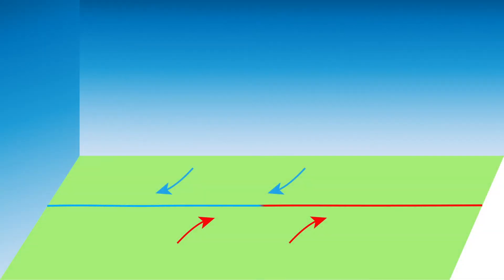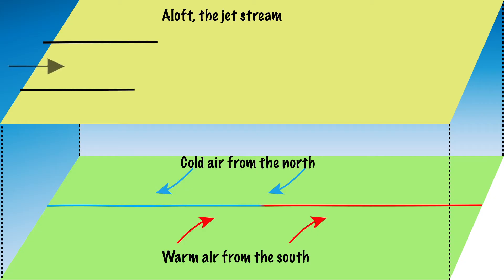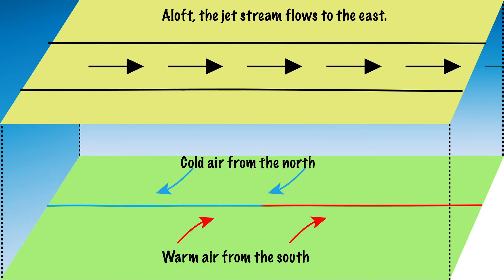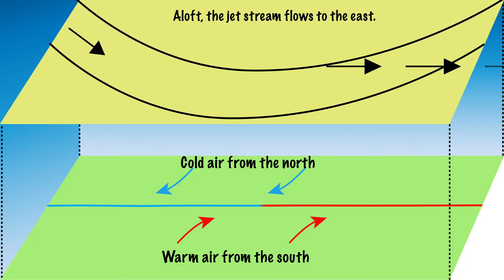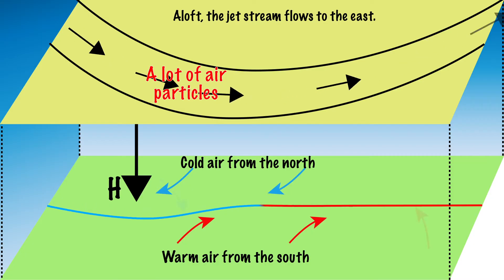The jet stream has a major influence on the weather. The cold air from the north and the warm air from the south collide, and much of the jet stream flows to the east. But in real life, the jet stream often has a wavy pattern. The strong wind aloft makes a turn, meaning that many air particles gather just before the turn, as if there are many cars in a traffic jam. These air particles sink to the bottom, and because more air particles are added than disappear at the surface, a high pressure area is created.